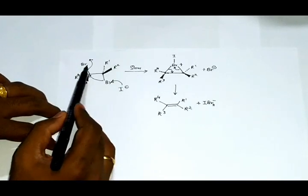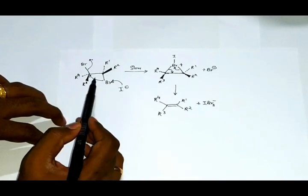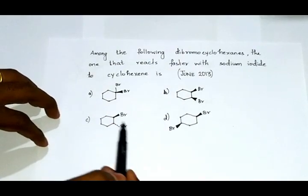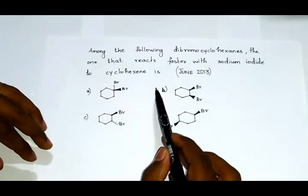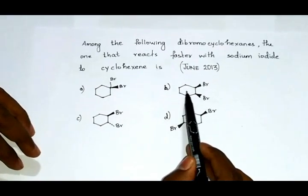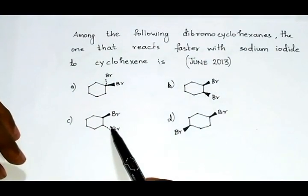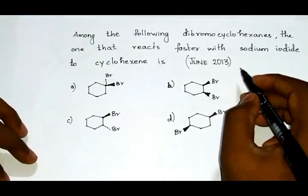Among these options, in the case of these bromine groups, only option C and option B have vicinal bromine groups. Let us draw the equivalent structure for each of the cases.